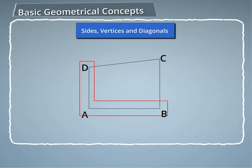AB and AD is one pair of adjacent sides of the polygon. The point where two adjacent sides of a polygon meet is called a vertex of the polygon.